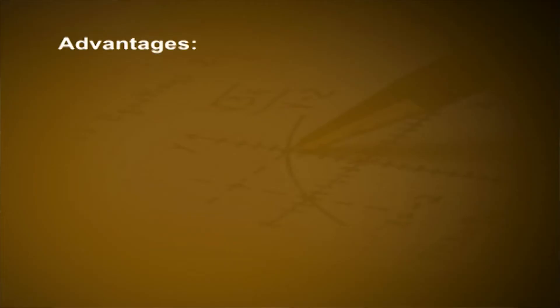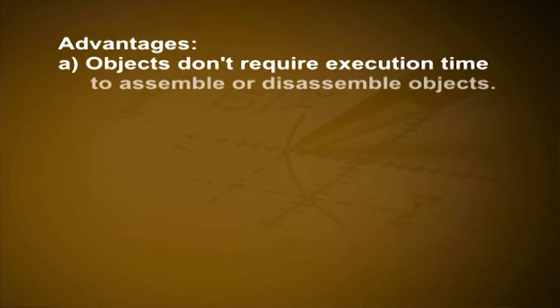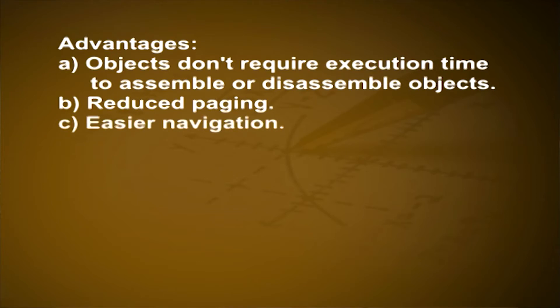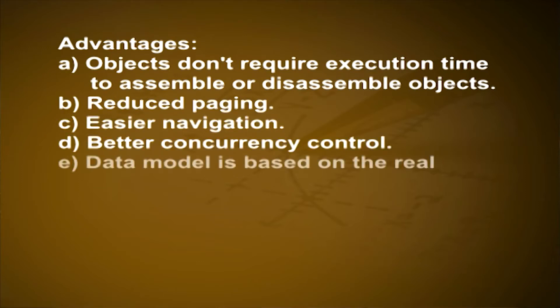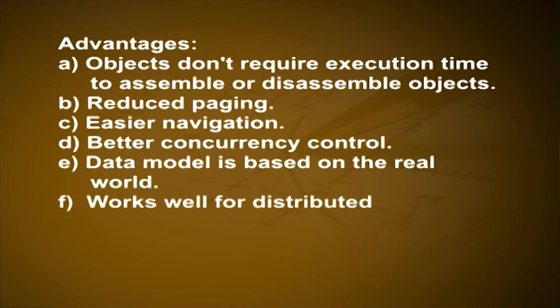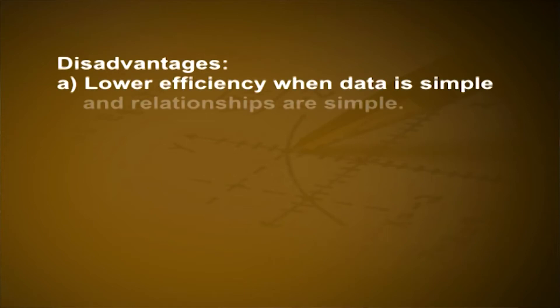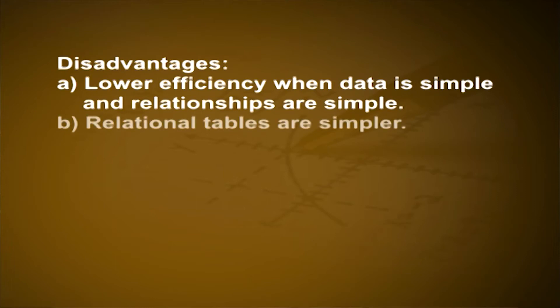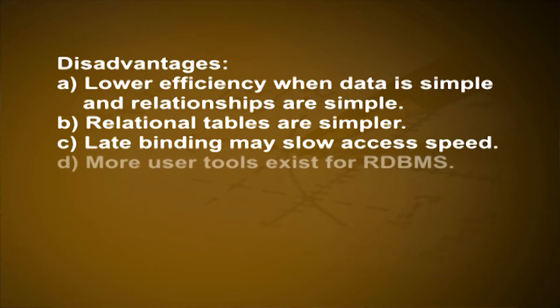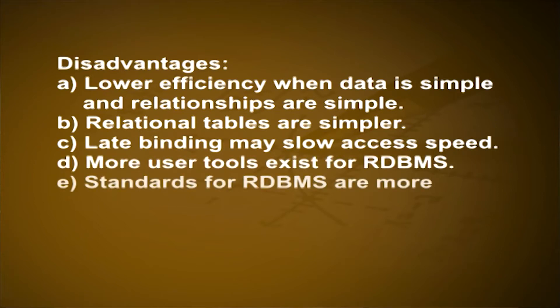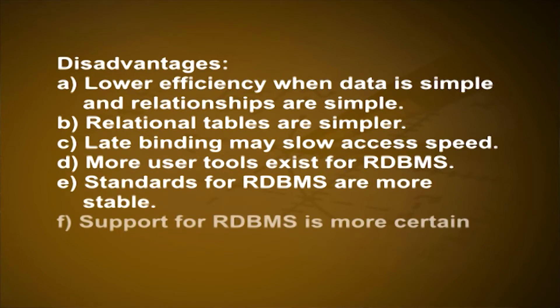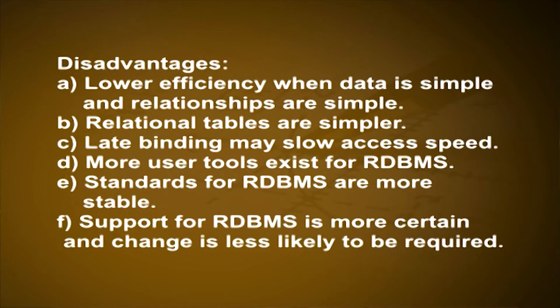Advantages of ODBMS over RDBMS: objects don't require execution time to assemble or disassemble, reduced paging, easier navigation, better concurrency control, data model is based on the real world, works well for distributed architectures, and less code is required when applications are object-oriented. Disadvantages: lower efficiency when data and relationships are simple, relational tables are simpler, late binding may slow access speed, more user tools exist for RDBMS, standards for RDBMS are more stable, and support for RDBMS is more certain with less likelihood of required change.